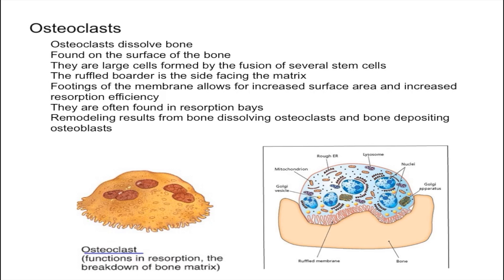In order to dissolve the bone, osteoclasts produce a variety of different enzymes, with the most important one being acid phosphatase. After the bone gets dissolved, it's broken into fragments and then the osteoclast engulfs the fragments and uses vacuoles to digest them.